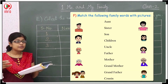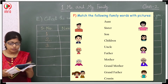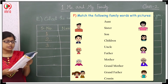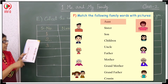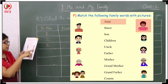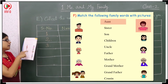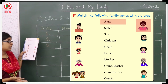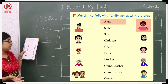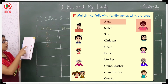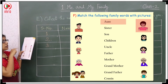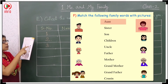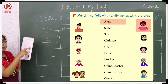Next the F-Bit: Match the following family words with pictures. Have a look here. See here — different pictures are there and the relationships are also given. So first thing you have to match. Who is given here? Aunt. She is looking like aunt, so that's why you have to match here.